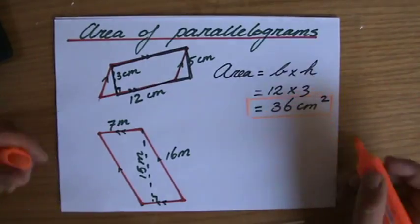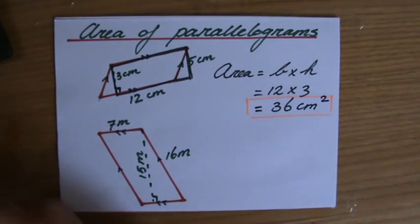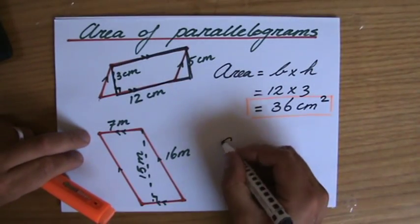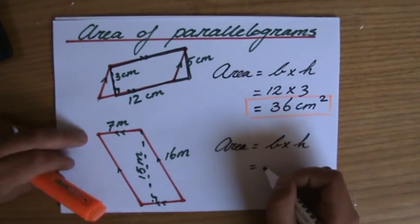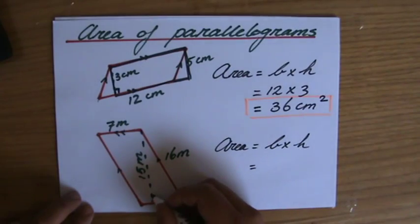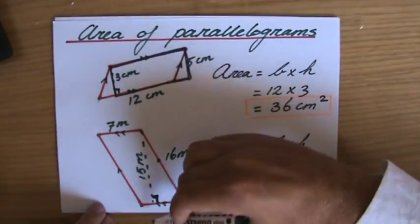Now the second problem: area of a parallelogram. The area equals base times height, where the base and the height make an angle of 90 degrees. Well, there's a 90-degree sign.